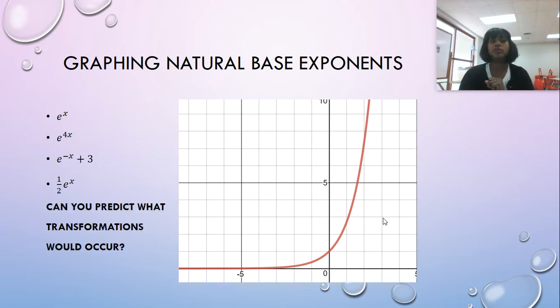And guess what? I bet you can predict any transformation that would occur. So I put it to you to pause. Go use Desmos.com. Check these transformations, but do it yourself first. What is that four going to do? What is the negative x and the plus three going to do? What is the one half going to do? And test it out on Desmos for yourself.